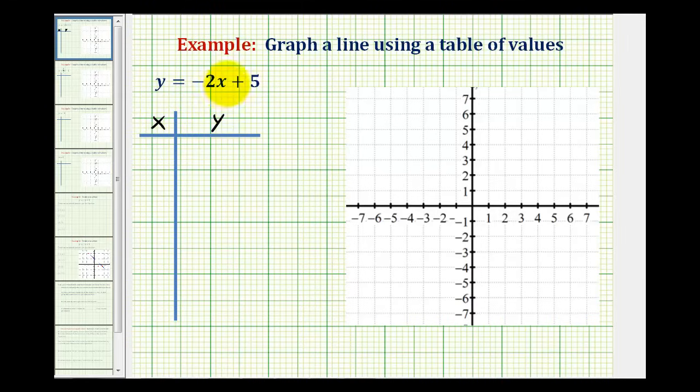So what we're going to do is select an x value, substitute it into the equation to determine the corresponding y value. And every x and y value that would satisfy this equation would be a point on the line which we can plot on the coordinate plane.